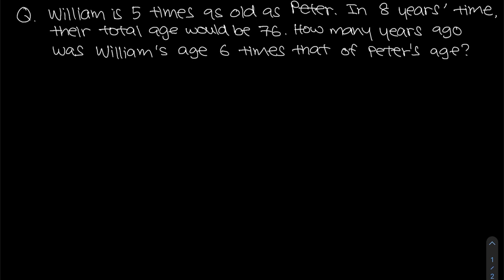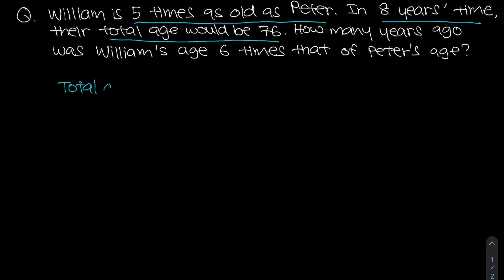From the question, William is five times as old as Peter. They also mentioned that in eight years' time, their total age would be 76. There are two persons — William and Peter. So what would their total age be now?